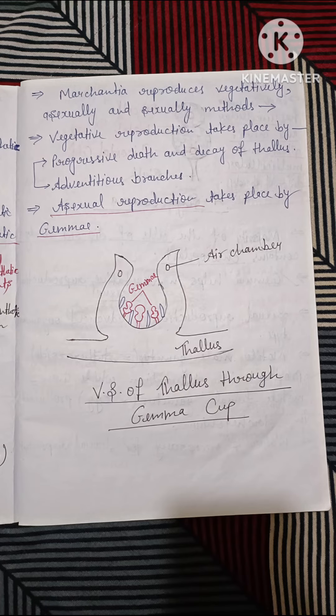A diagram of a single gemma shows it has two types of cells: oil cells and rhizoidal cells, with a notch present between these cells. Each gemma has a unicellular short stalk and a multicellular disc-shaped body. The majority of cells in the disc-shaped body contain chloroplasts. Gemmae help in asexual reproduction, which is an important characteristic of Marchantia. That's all for today — do like, share, and subscribe to my channel. Thank you.